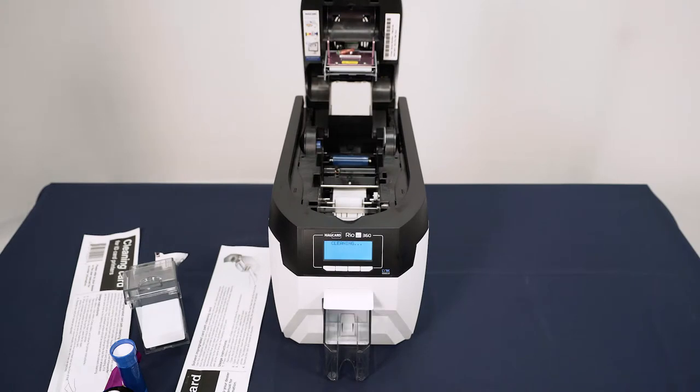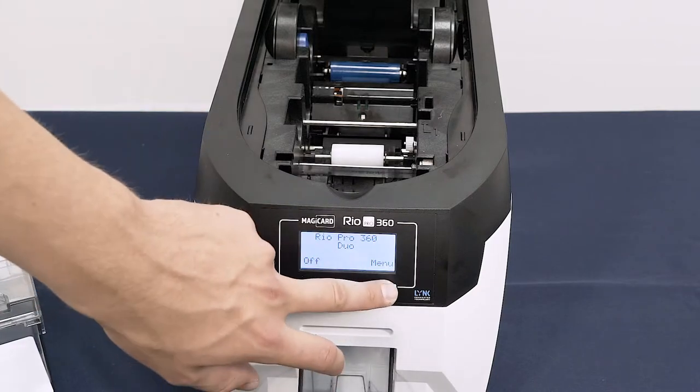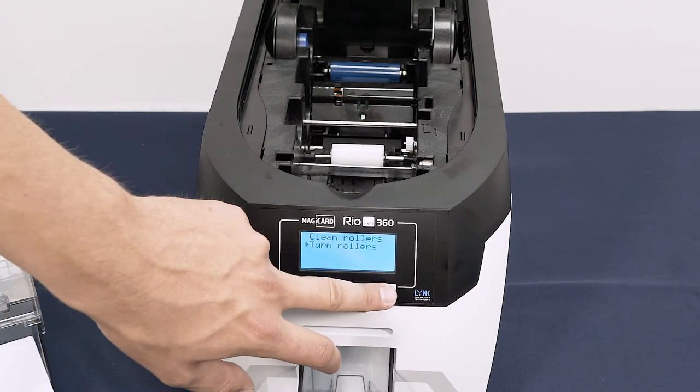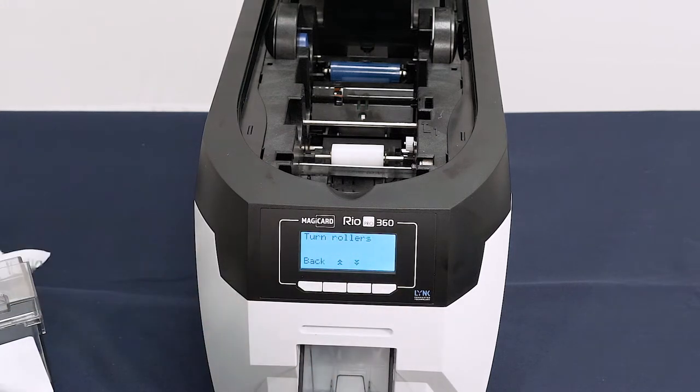Once complete, click no to exit the cleaning menu. You will then return to the main menu. Next, click menu, then the downwards button to move the cursor to Turn Rollers. Select this option with the right hand button.